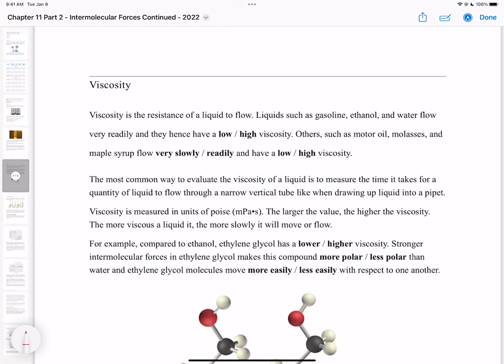Common examples of very viscous liquids are sap, honey, molasses, and syrup. Very polar things will be more viscous because they're more attracted to each other. Liquids such as gasoline, ethanol, and water flow very readily, so they have low viscosity. Others such as motor oil, molasses, and maple syrup flow very slowly and have high viscosity.